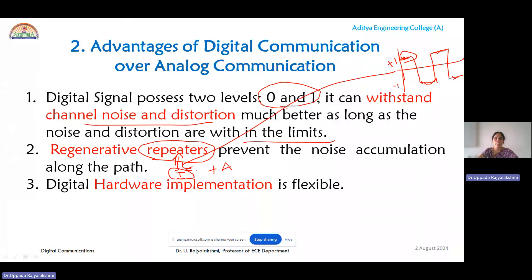If the input magnitude is greater than the threshold, it is considered as data bit one, the higher level. Otherwise, it is considered as the low level. The comparator output will be either zeros or ones, which is then strengthened by the amplifier. Because of these repeaters which regenerate the original digital signal throughout the channel, we can prevent noise accumulation and reconstruct the noise-free digital signal.